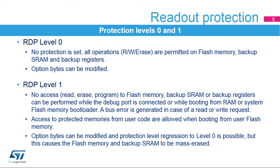Level 0 is the factory default level. In level 1, read protection is set for the flash memory, the backup SRAM, and the backup registers. In this level, protected memories are only accessible when booting from user flash memory. Whenever a debugger access is detected or boot is not set to a flash memory area, any access to the protected memories generates a system hard fault, which blocks all code execution until the next power-on reset. Note that option bytes can still be modified in this level, making it possible to remove the protection.